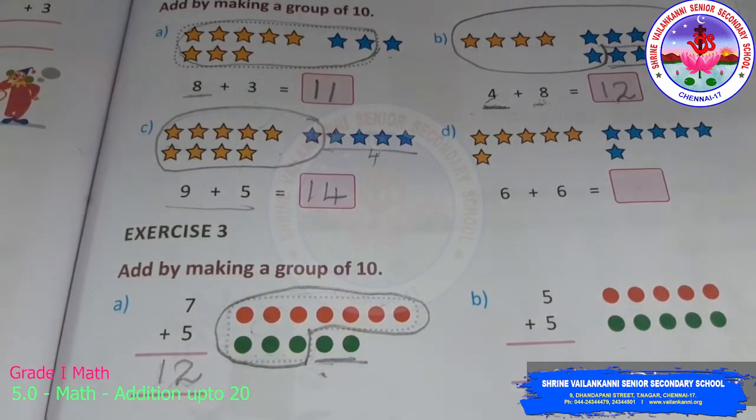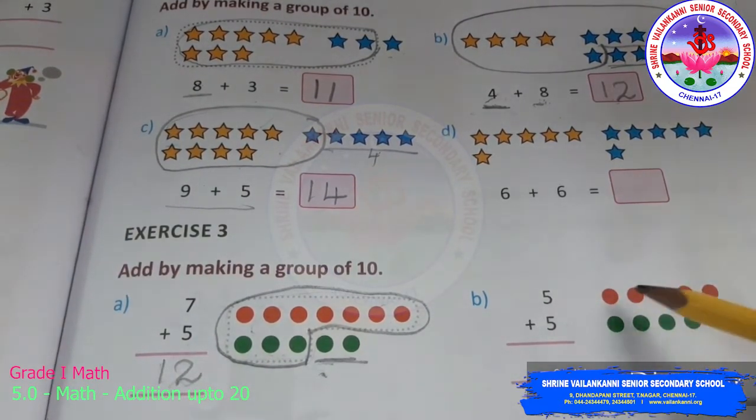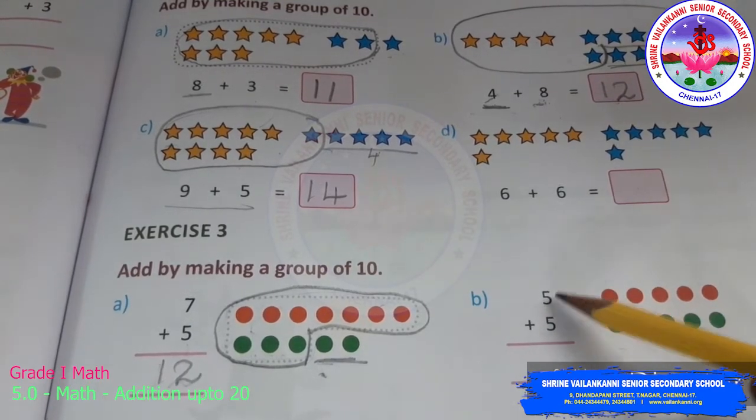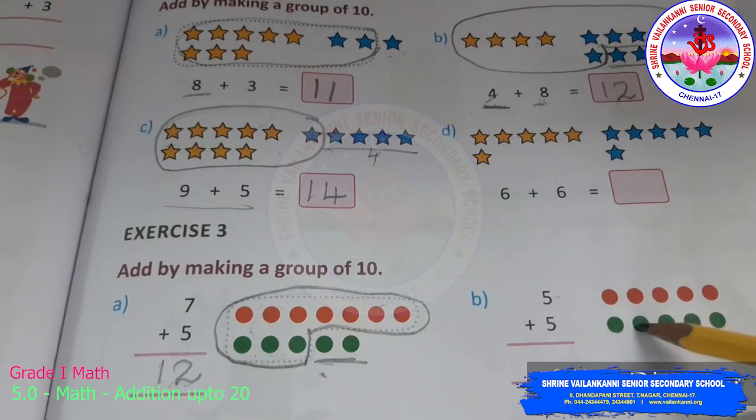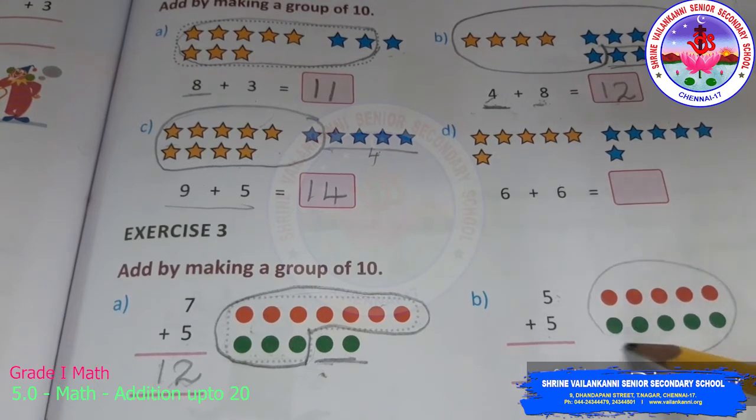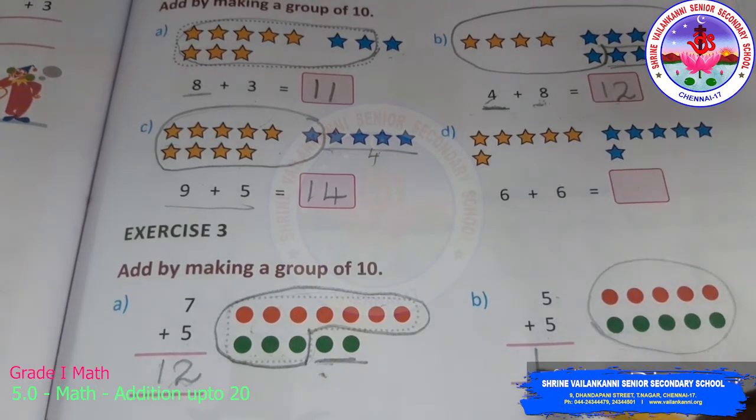Now, 5 plus 5. How many more will I need to make this 5 a 10? So, 1, 2, 3, 4, 5, 6, 7, 8, 9, 10. So, I have to take all the 5 to make a 10. So, 5 plus 5 is 10.